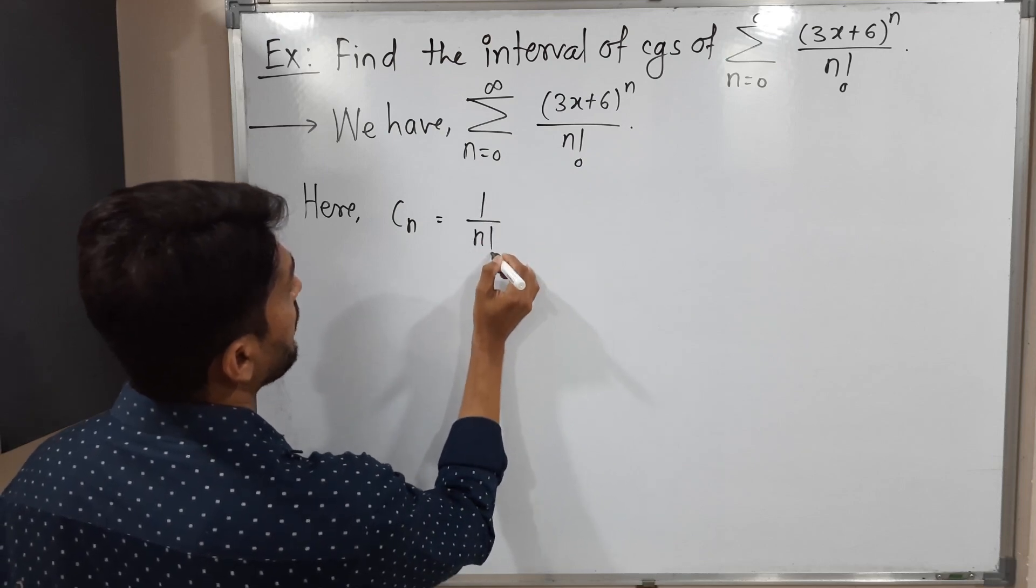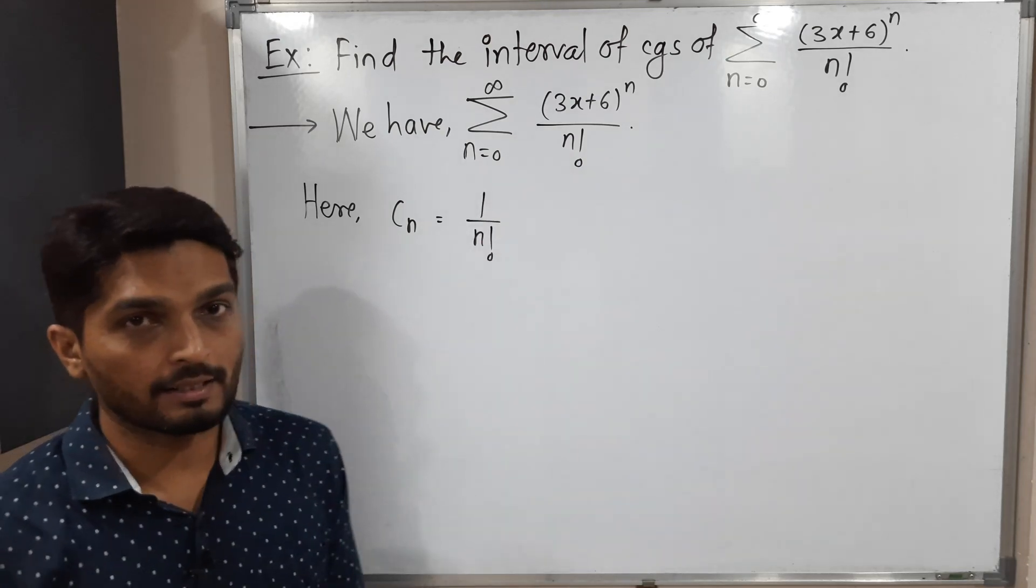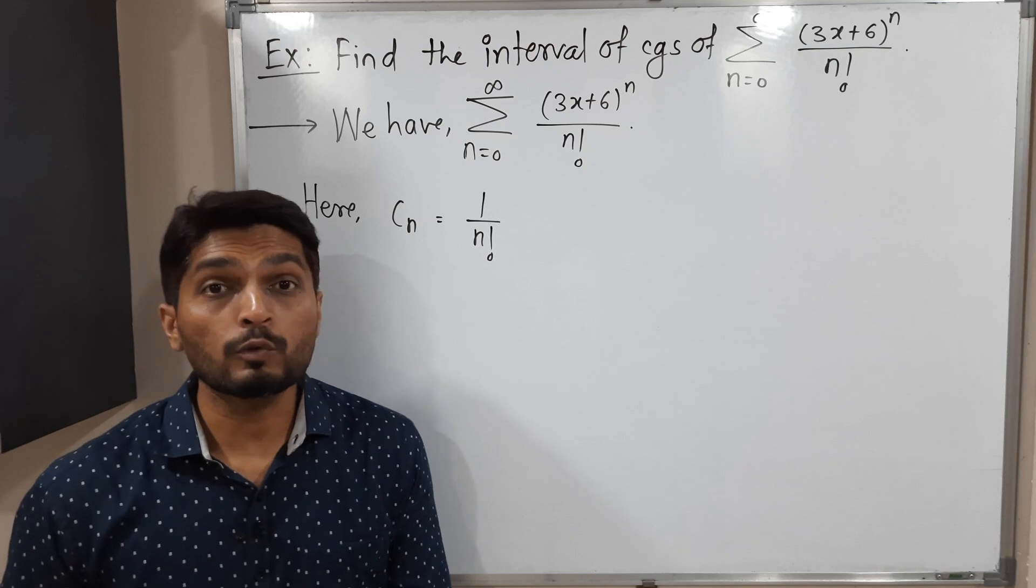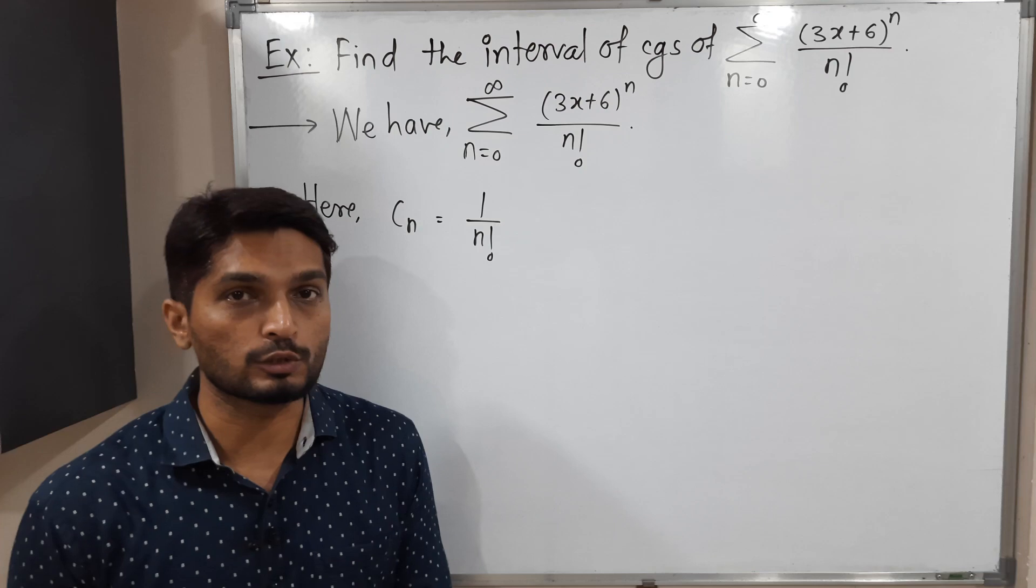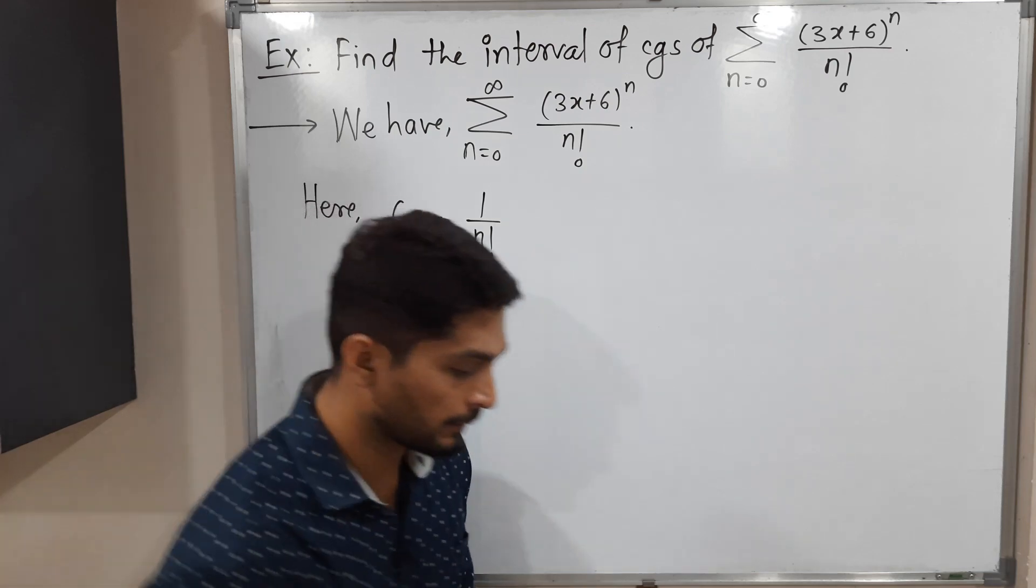See, we have to find the interval of convergence, but for that we need to know the radius of convergence. So let us find the radius of convergence first.